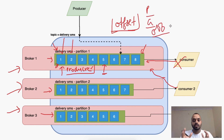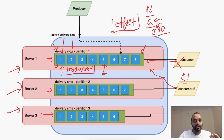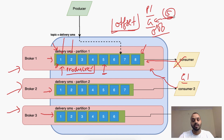This offset topic basically holds partition information, group information, and offset information. So basically: this group, this partition of this group, has this offset. Whenever consumer 2 comes in, it provides its group — let's say G1 — it goes to G1 and partition P1, and it gets the offset 5.